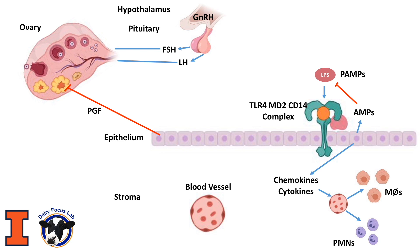However, the neutrophil function is perturbed in high-producing dairy cows, particularly when they are facing negative energy balance. And the persistence of neutrophils in the endometrium without the presence of pathogens can characterize subclinical endometritis. The endometrial damage and inflammation reduce the chance of conception — so here we have our first problem.